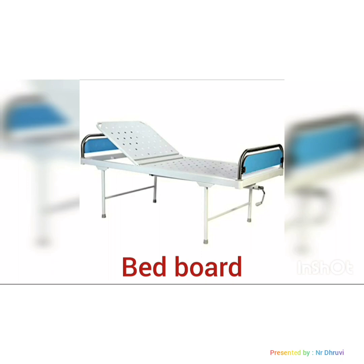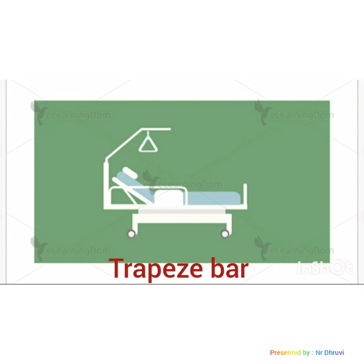The next device is the trapeze bar. It is a triangular device attached to an over-bed frame. It is used to enable patients to raise their trunk from the bed, move from bed to wheelchair, and help patients perform exercises that strengthen the upper arms.